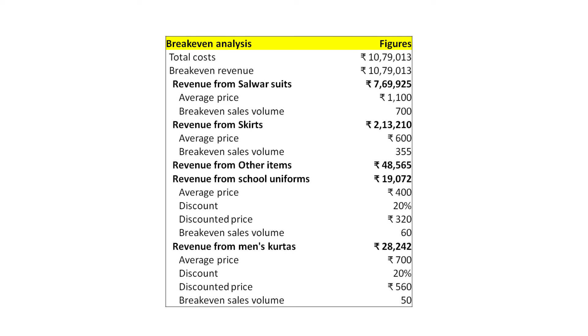She is confident that she will be able to easily sell the required number of school uniforms since many of her regular customers have school-going children. She is not very confident about selling the required number of kurtas, but she is hoping that discounts will help her reach that volume. She knows she will have to focus on selling more school uniforms to achieve break-even revenue easily. Having done the break-even analysis and the reality check, Sundari is ready to prepare the growth plan, which we will discuss in the next session.